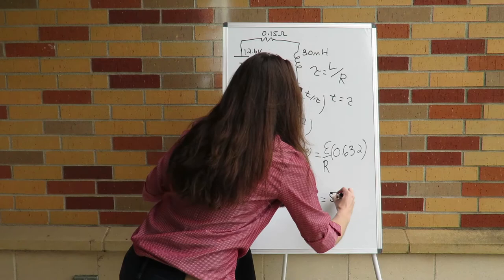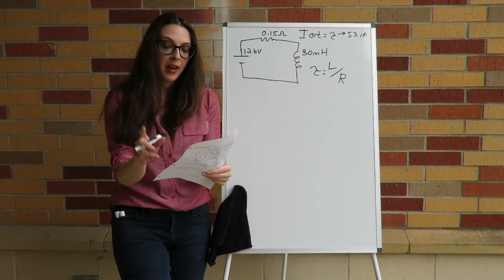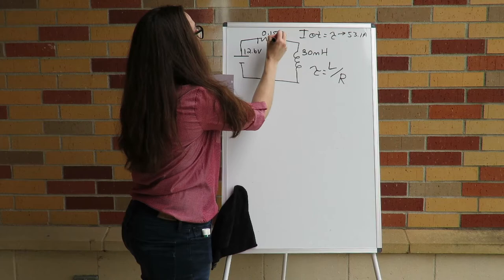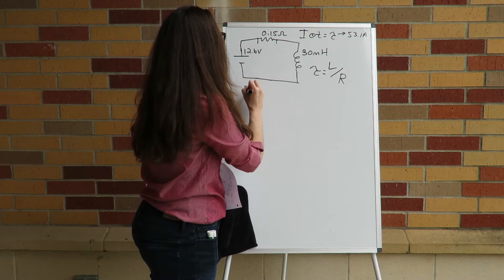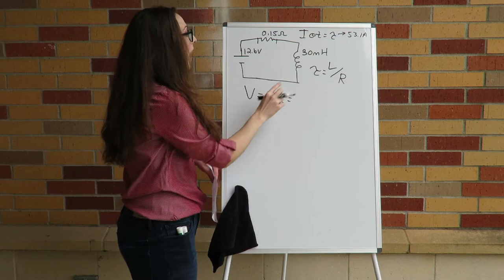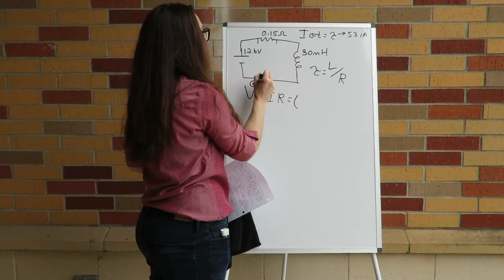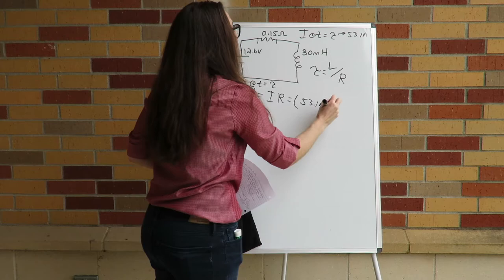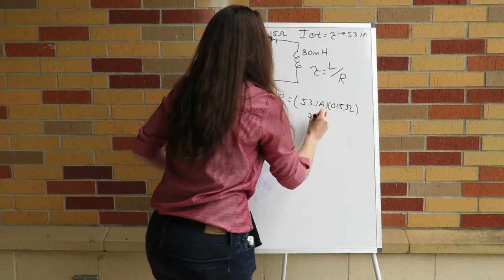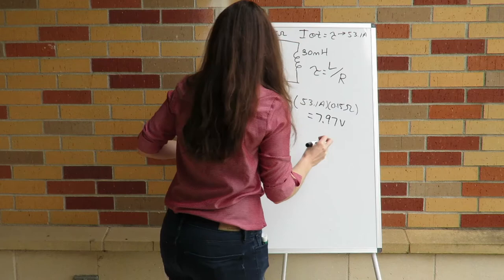To find the voltage drop across our resistor after one time constant t equals tau, we use Ohm's law: V equals IR. We know the current at t equals tau was 53.1 amperes, so the voltage across the resistor is 53.1 amperes times 0.15 ohms, which equals 7.97 volts.